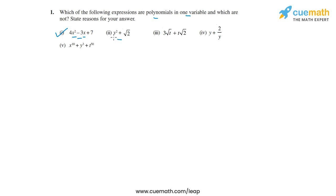The expression in option two is also a polynomial because the variable is y and the power of the variable is an integer — it is two. It is also a polynomial in one variable because it just has y. So option two is also correct.